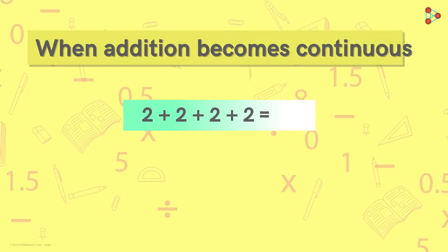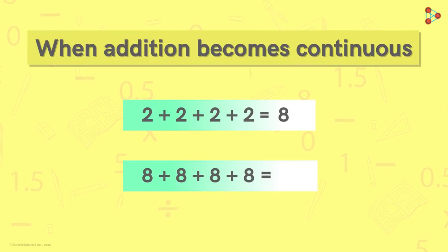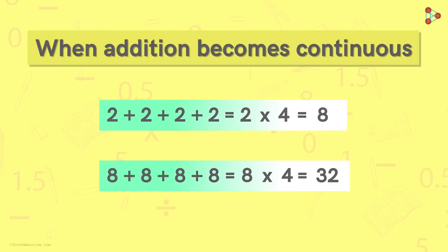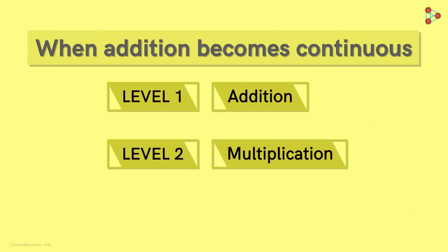Addition of numbers is one of the most basic things that we learn in our childhood. We get more efficient and faster at it once we learn how to multiply numbers. But when addition becomes continuous, we have to upgrade the skill.